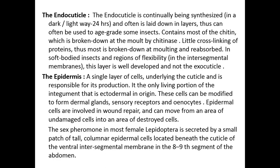The endocuticle is continuously being synthesized in a dark-and-light cycle over 24 hours and is often laid down in layers, which can be used to age-grade some insects. It contains most of the chitin, which is broken down at molting by chitinase. There is little cross-linking of protein, so most of the endocuticle is broken down at molting and reabsorbed. In soft-bodied insects and regions of flexibility — such as the intersegmental membrane and arthropodial membrane — this layer is well developed while the exocuticle is not.